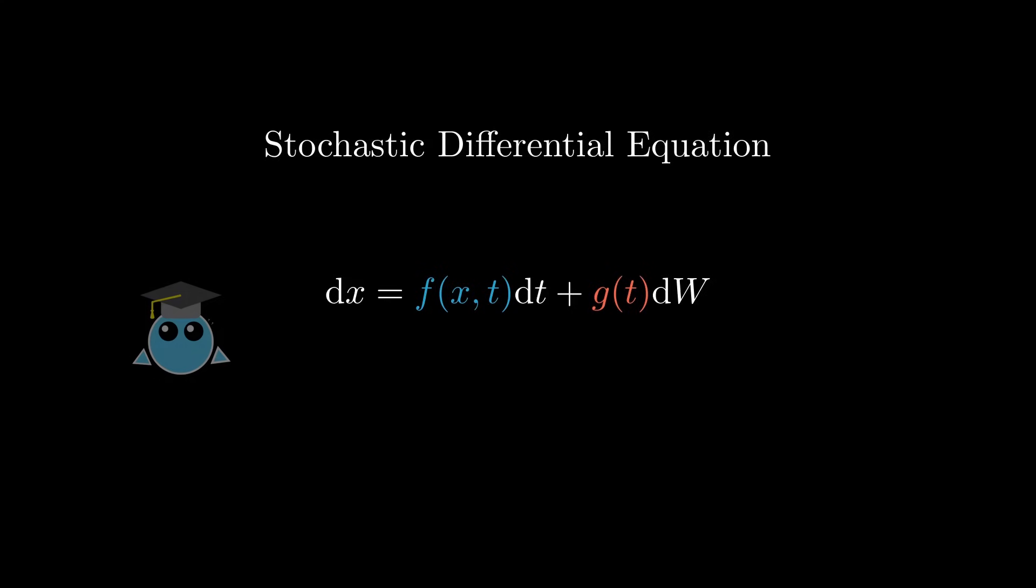This is a specific kind of stochastic differential equation called an Ito equation. What does that even mean? Well, it's called a differential equation because it relates the variable x to its infinitesimal change over time. And it is stochastic because this expression contains a second term called a Brownian process, which is random.